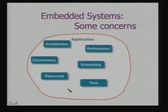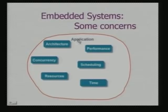The determination of architecture, its performance constraints, concurrency model, scheduling issues, and availability and use of resources — all these things are basically determined by the application. These aspects of the design clearly distinguish the problem of designing an embedded system from that of a general purpose computer.